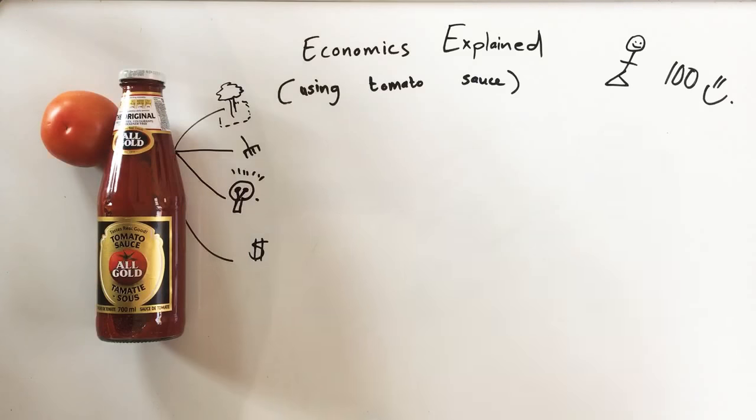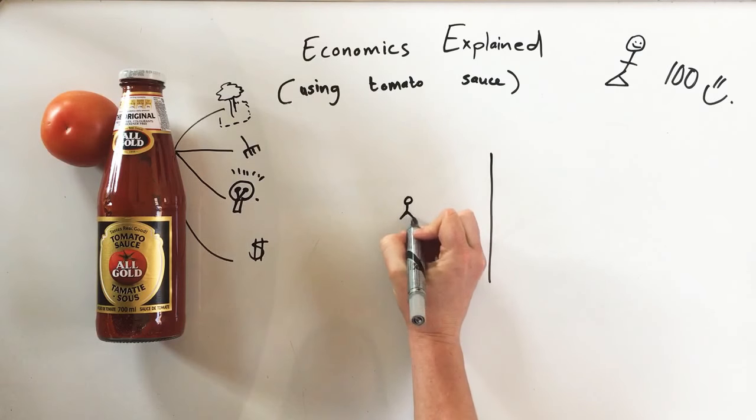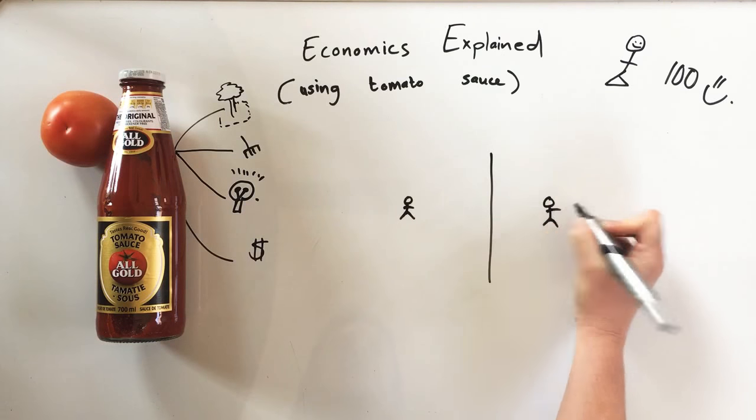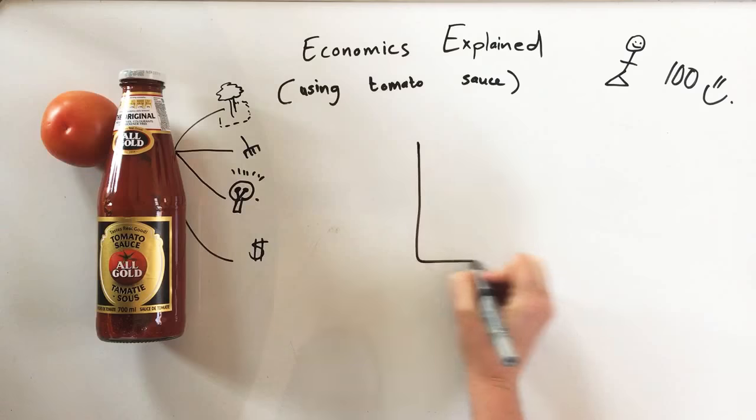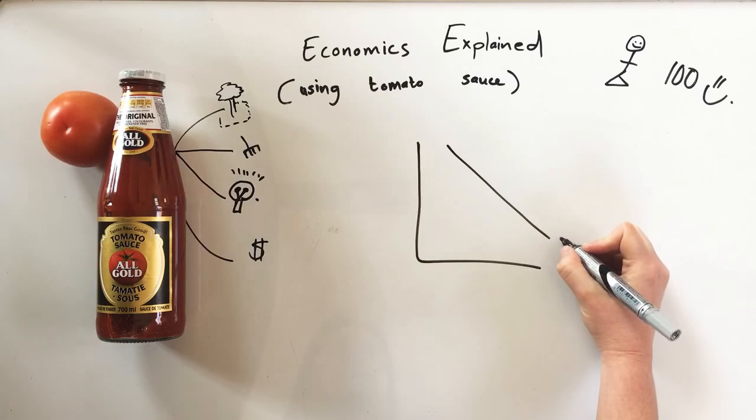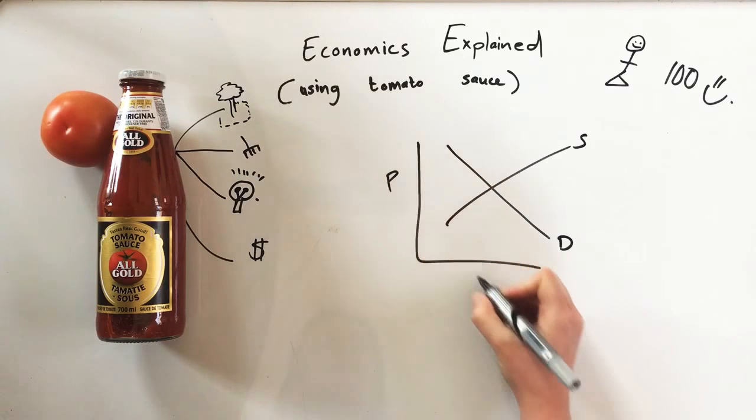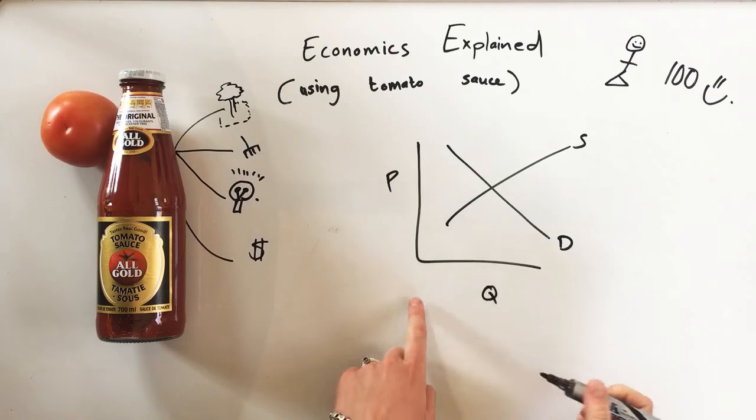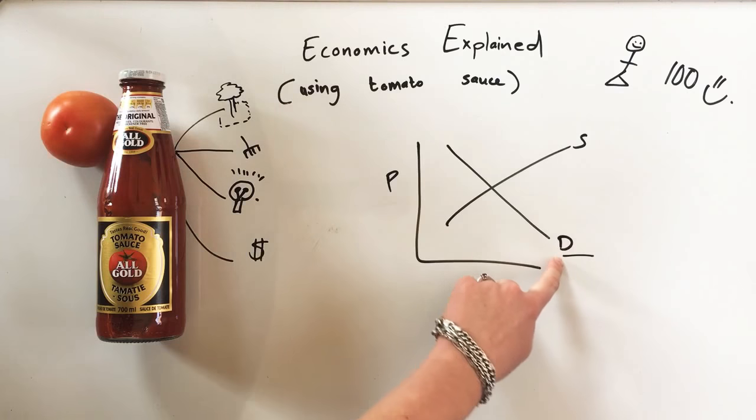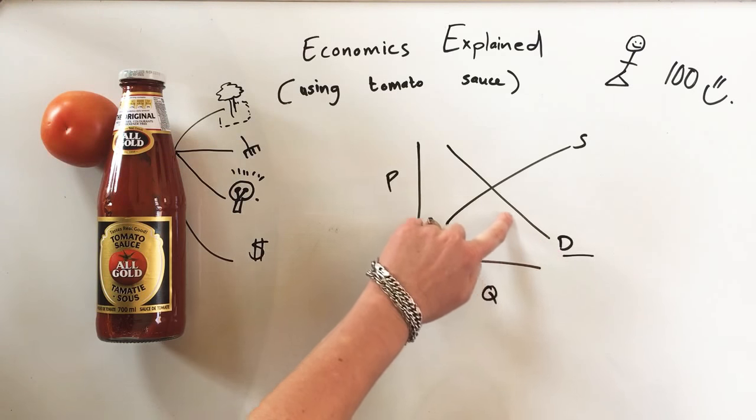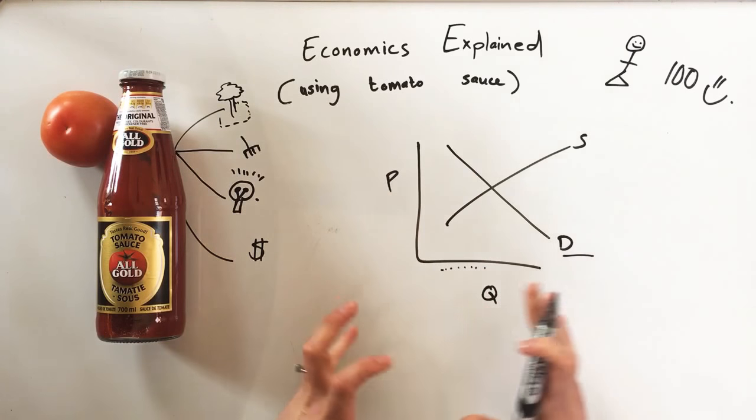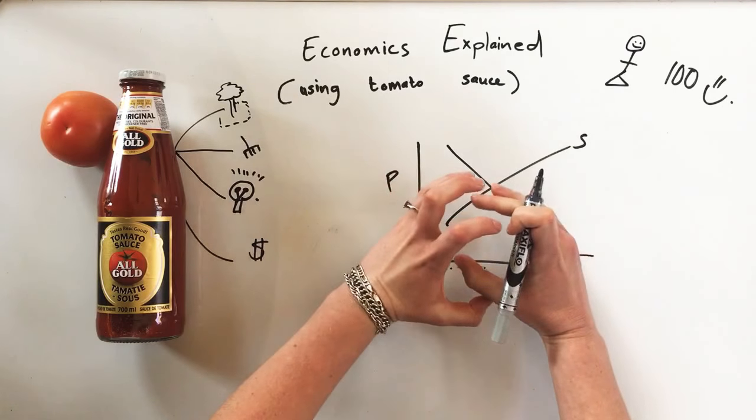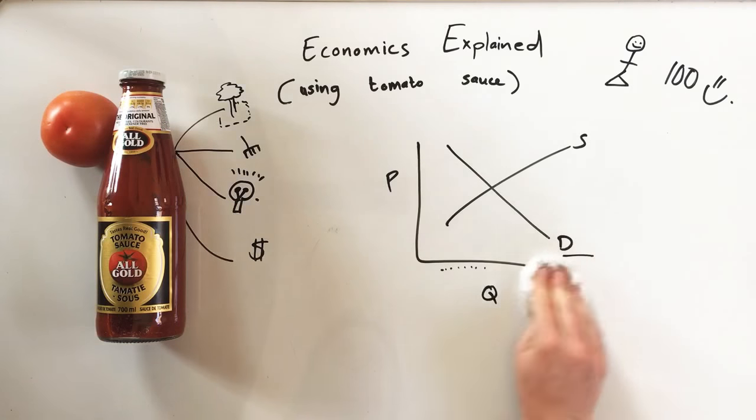With microeconomics, we have supply and demand. So here we have demand and supply. And here we have price, and you have quantity. And it says that the higher the price—so the demand, how many people want something like tomatoes—the higher the price goes, the less people will want to buy the product. And this is micro, so if you take it small in back, it's microeconomics.